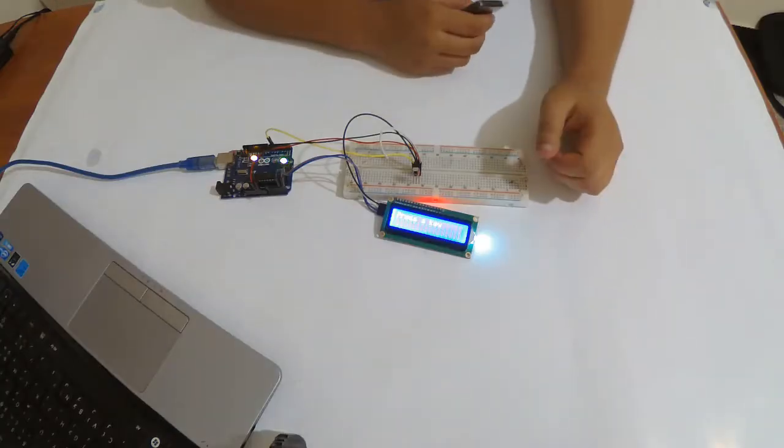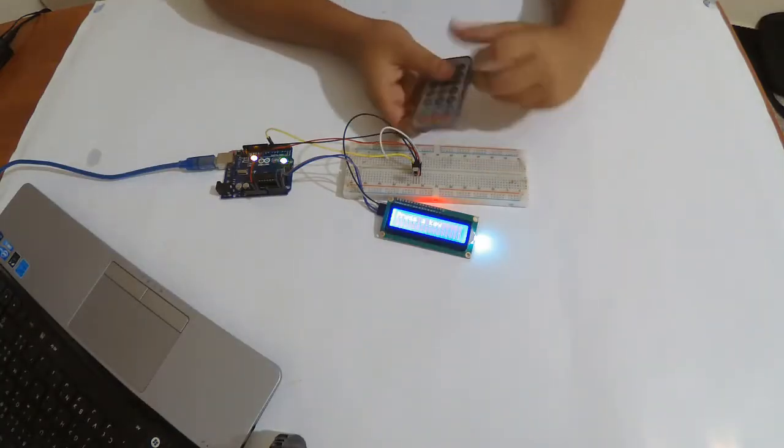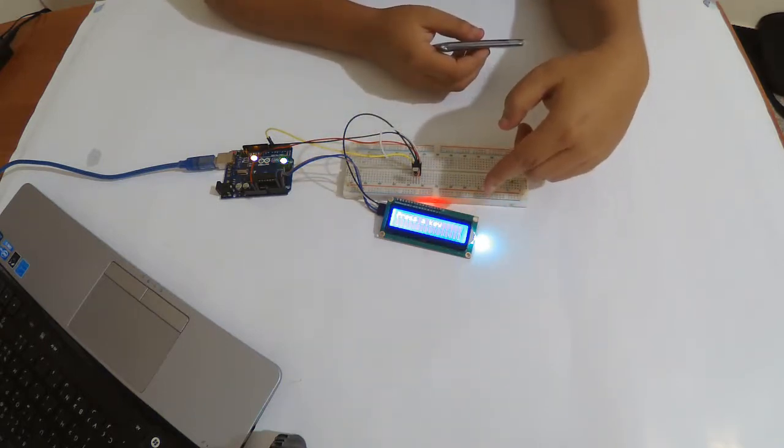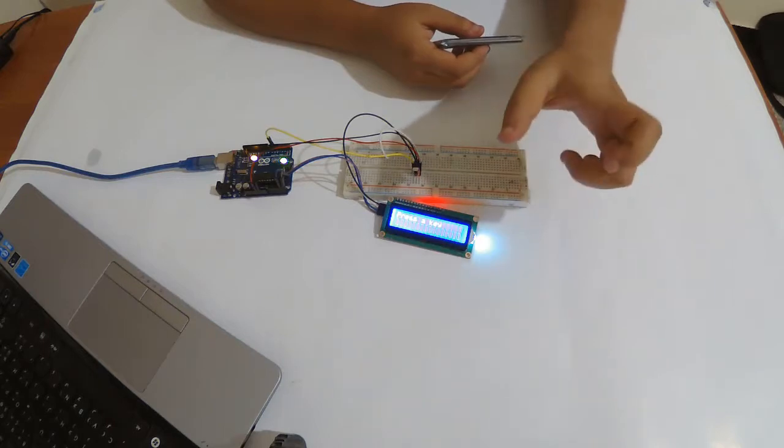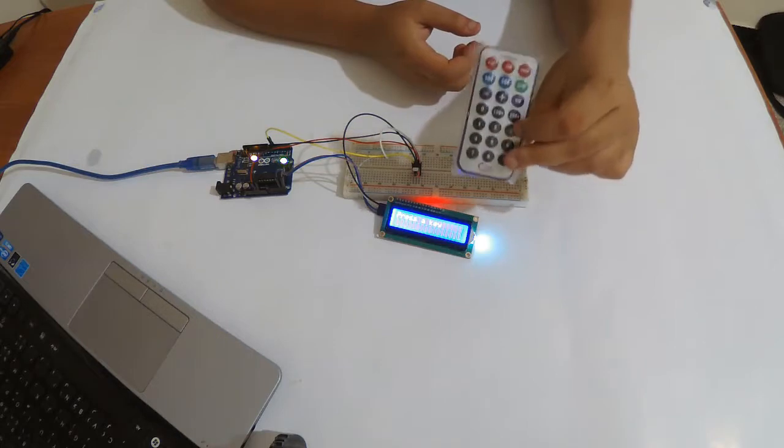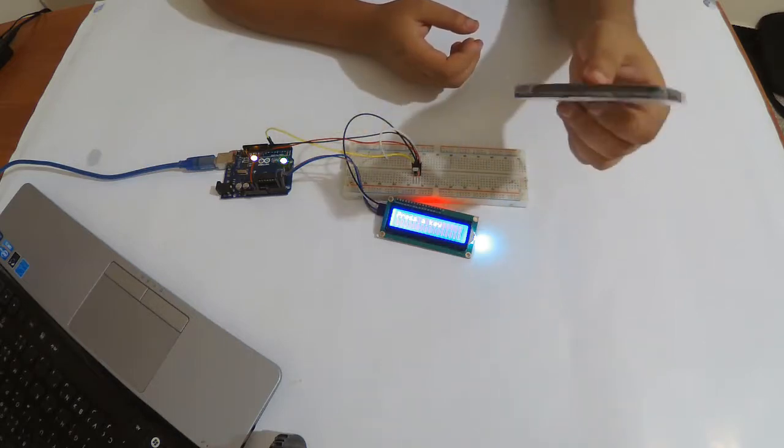So I just uploaded my first code. It reads the signal from the remote control and shows the hexadecimal number on the display screen. As I said, different remotes have different types of signals.